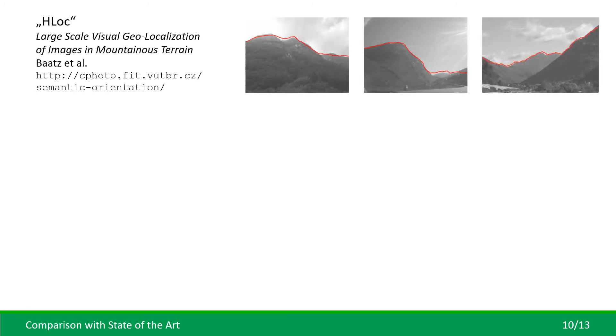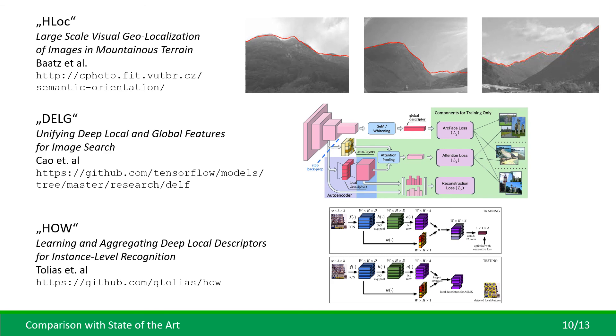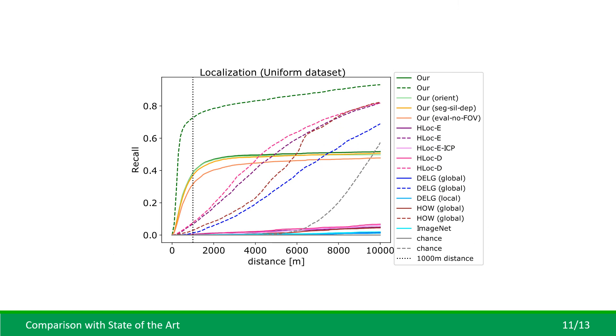We compared the localization performance of our CrossLocate approach with state-of-the-art localization methods utilizing retrieval, namely the HLoc method using horizon lines for localization in nature and DELG and HOW methods representing advanced image retrieval approaches usable for localization. The results show that all the competing methods are significantly outperformed by our CrossLocate approach.